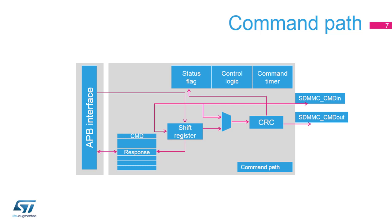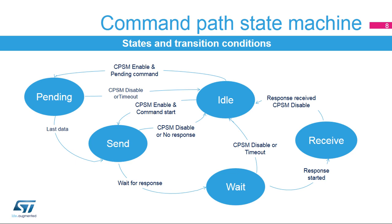The command path circuit is used to program a command response sequence. When enabled, the command path shifts out the command index and argument on the SDMMC-CMD pin. After the last payload bit is sent, a CRC-7 is computed and sent on the bus before generating the end bit. When a response is expected, the command path is configured to SDMMC-CMD-IN and waits for the device response. The transmission and reception of commands is controlled by the command path state machine (CPSM). When no command or response is in progress, the command path is in idle state.